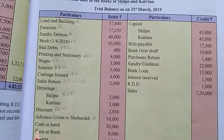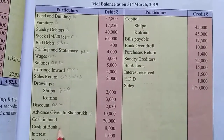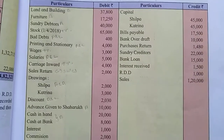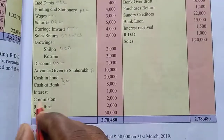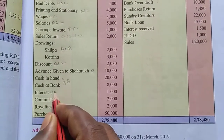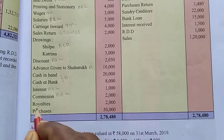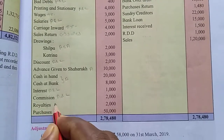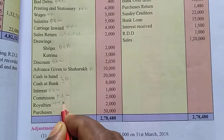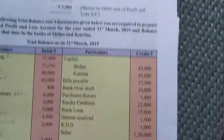Asset: cash in hand, cash at bank will be asset. Interest to profit and loss, commission to profit and loss, royalties to trading account, purchases to trading account. Then we will go to the credit side.